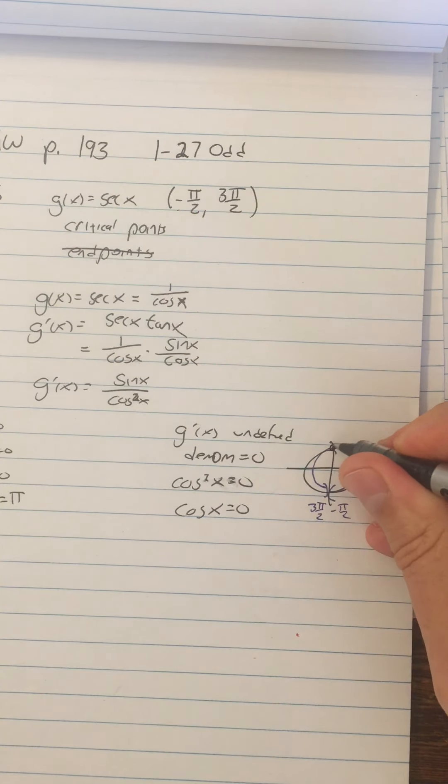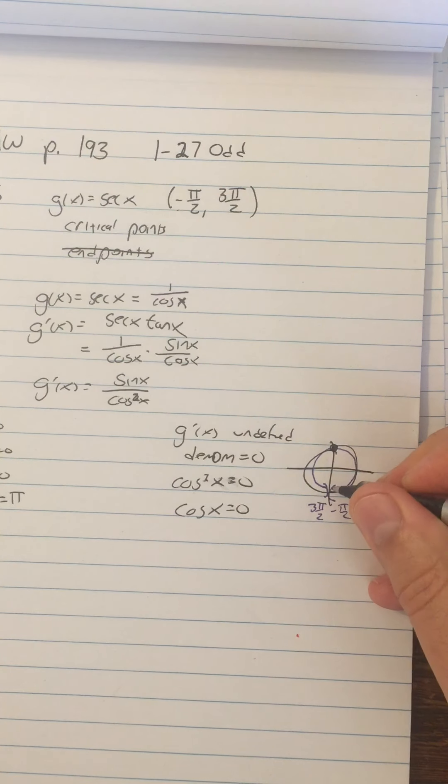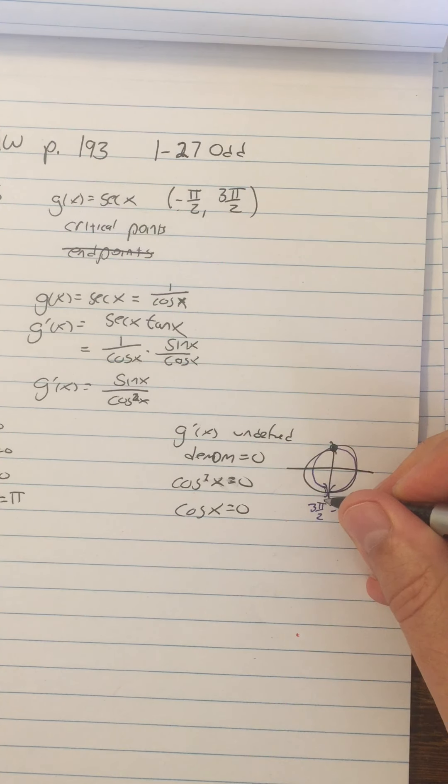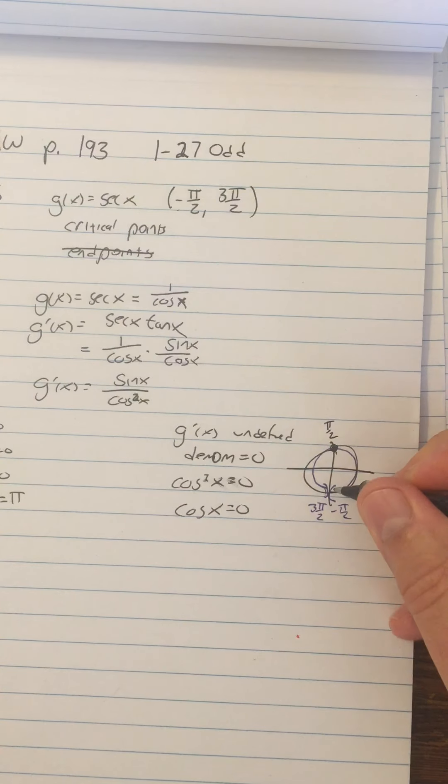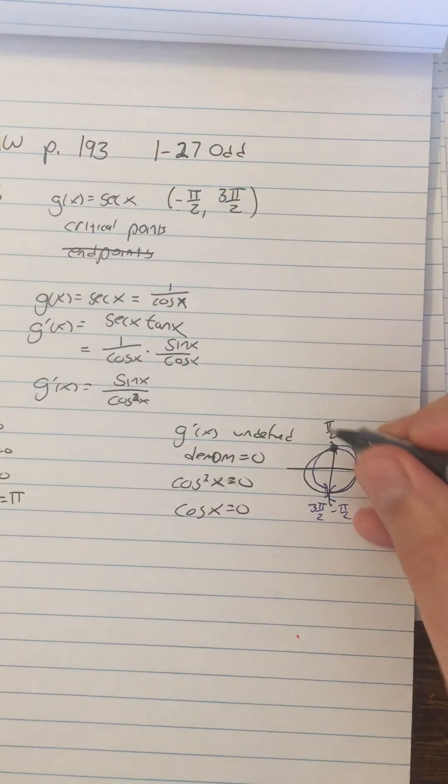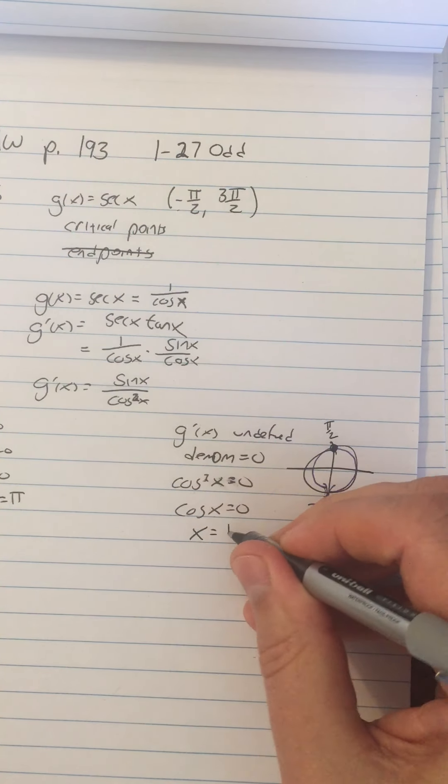On that open interval from negative pi over two wrapping around to positive three pi over two, but not including either of those endpoints. Where is the cosine equal to zero? We're not including negative pi over two and pi over two. So the only place where the cosine is zero within this open interval is pi over two. So x equals pi over two.